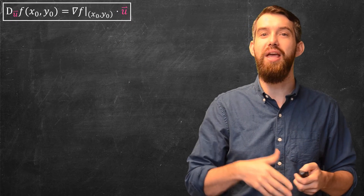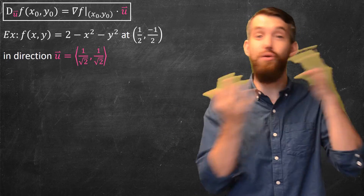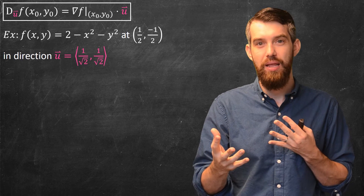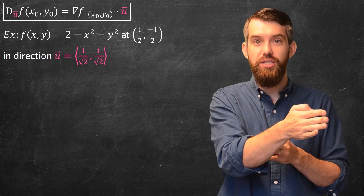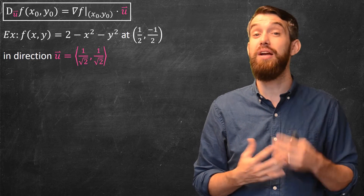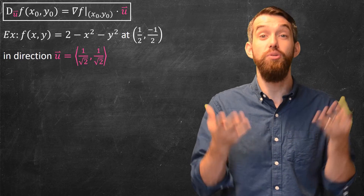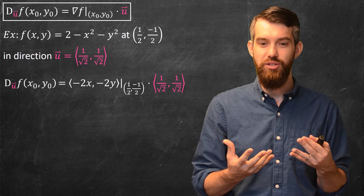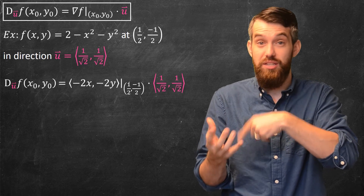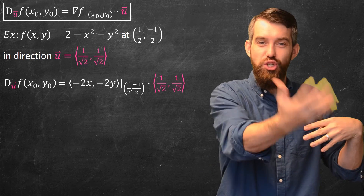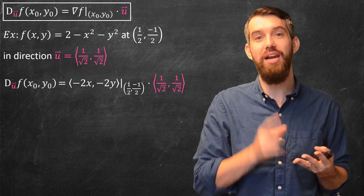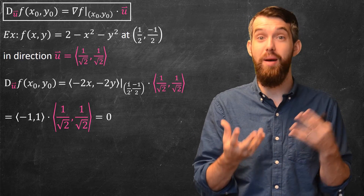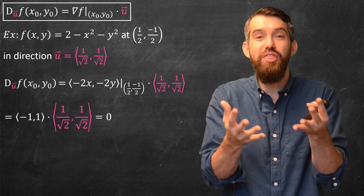Let's see an example. The function is f = 2 − x² − y², which is the graph shown earlier in the video. We investigate it at the point (½, −½), and we go in the direction u = (1/√2, 1/√2), which has length 1. The gradient vector has components: partial with respect to x is −2x, and partial with respect to y is −2y. Evaluating at (½, −½) gives the gradient (−1, 1), and dotting with (1/√2, 1/√2) gives 0.